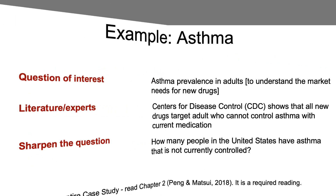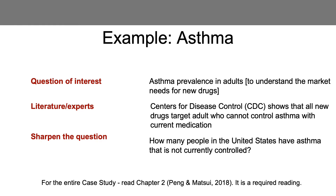Let's look at an example from chapter two of the Peng and Matsui book, which is your reading for this week. Your initial question is to determine the prevalence of asthma among adults, because your company wants to understand how big the market might be for a new asthma drug.